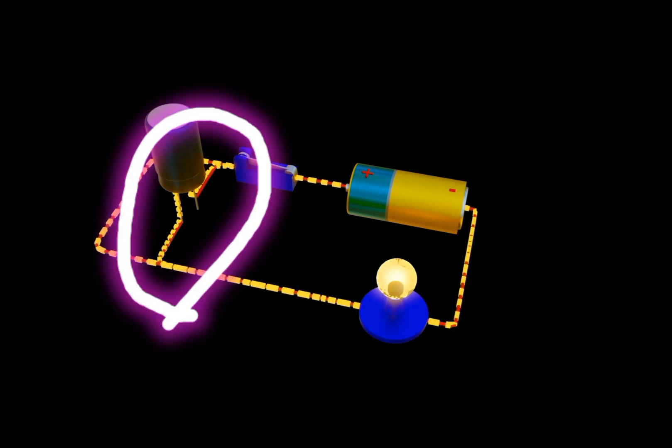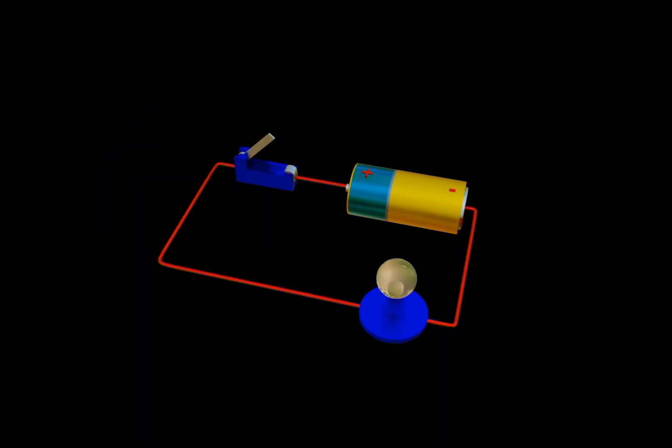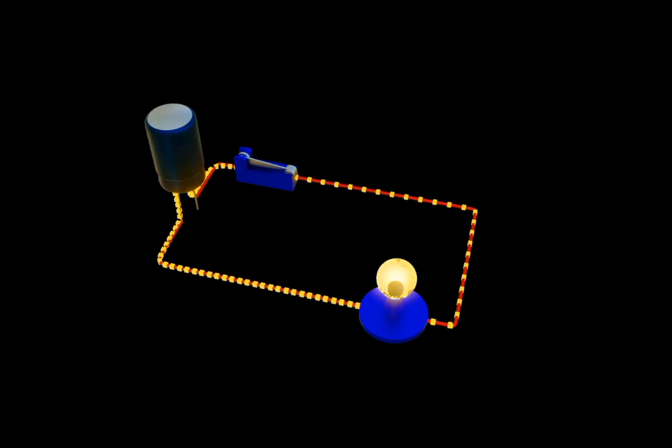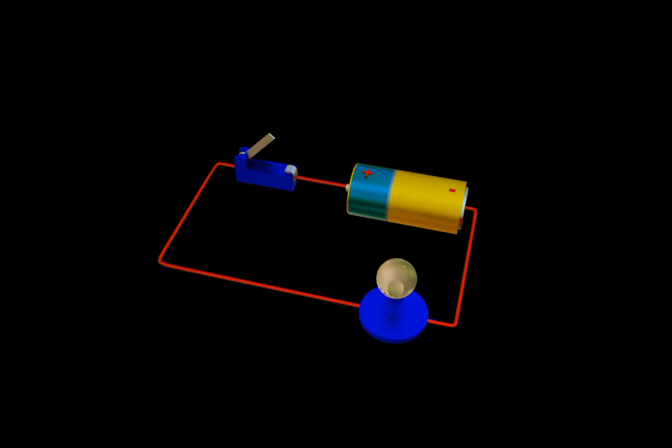When you connect a battery with a capacitor in series, the current will flow across the circuit, since capacitor releases the electrons to the circuit. But once the capacitor is fully charged and battery is still connected, the circuit will go off.